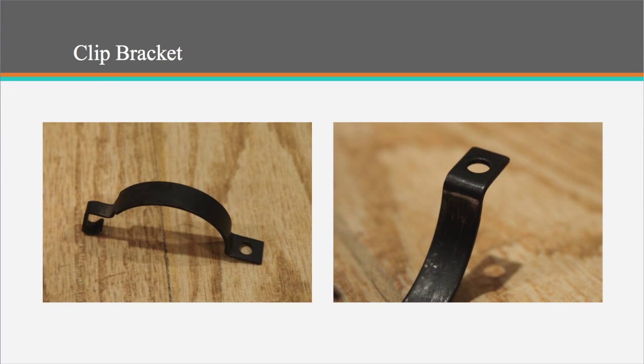The second part that we decided to analyze is the clip bracket, which is used to constrain the roller brush about its rotational axis.